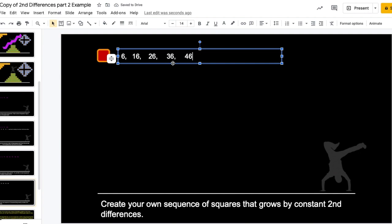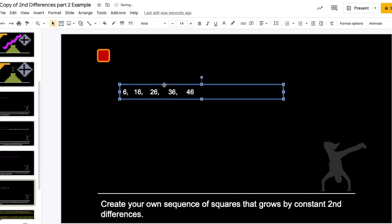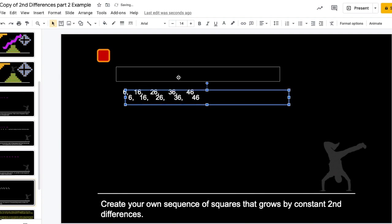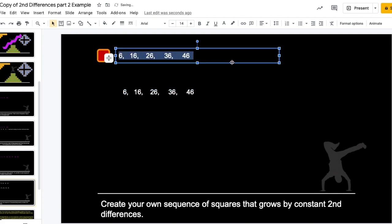But, if you make a sequence like this, you can use it to create a second difference sequence. Let's start at any number, like 7. And if I add these amounts, I'll have a second difference sequence.